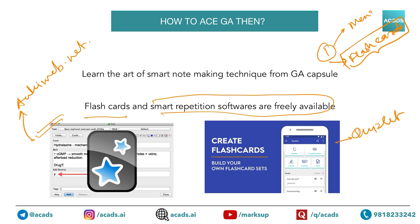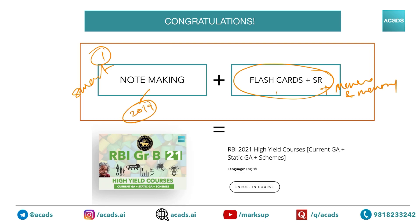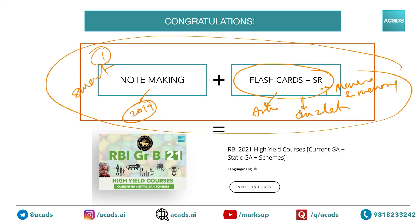If you are looking for spaced repetition algorithms, we prefer Anki; if you want a better interface and a cool-looking app, then Quizlet is the answer. To summarize: the CATS GA capsule is about two things — smart note-making and flashcard spaced repetition plus mnemonics and memory tricks. This can be done using the free 2019 capsule and tools like Anki and Quizlet. Combine all these things and you have your own GA capsule ready. We suggest spending 10 to 12 days on building the capsule — it will be very handy in the last days of your preparation.